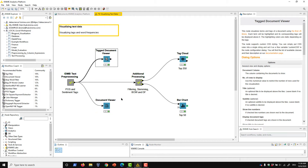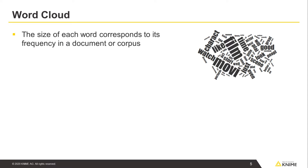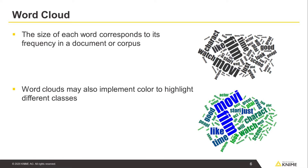What if we'd like to generate a visual summary of the contents of a large text collection? An easy way to do this is to use a word cloud, which will group together text where the size of each word corresponds to its frequency in a document or corpus. Word clouds may also implement color to highlight different classes that may appear in the text.